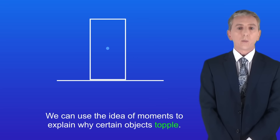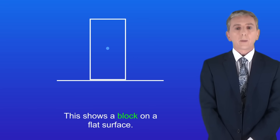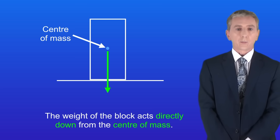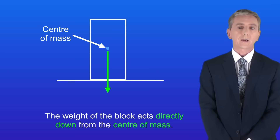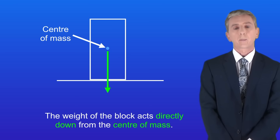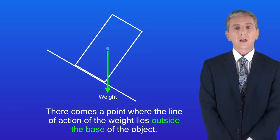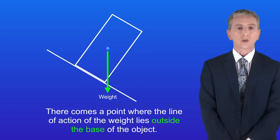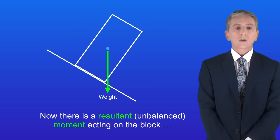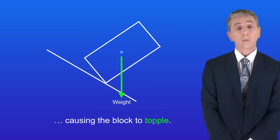We can use the idea of moments to explain why certain objects topple. Here is a block on a flat surface. The weight of the block — the force due to gravity — acts directly down from the center of mass. When the block is tilted, there comes a point where the line of action of the weight lies outside the base of the object. At that point, there is a resultant or unbalanced moment acting on the block, causing it to topple.